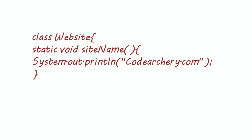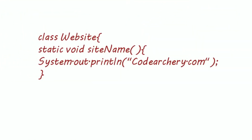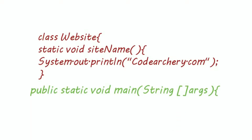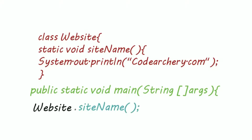For example, for a class called website, to call the static method site name we don't need to create any object. We can simply write the class name — website — dot the method name — site name — and this will call our method. We will see this practically in a minute.